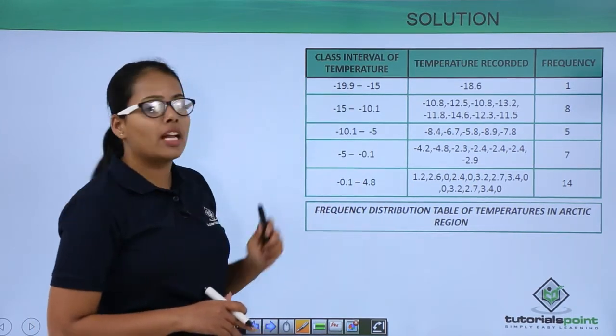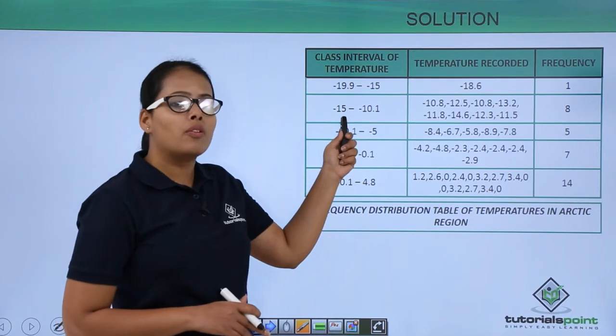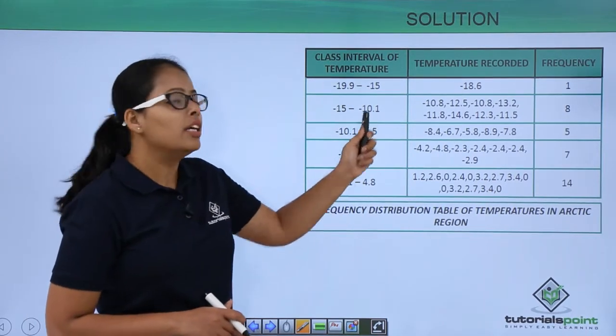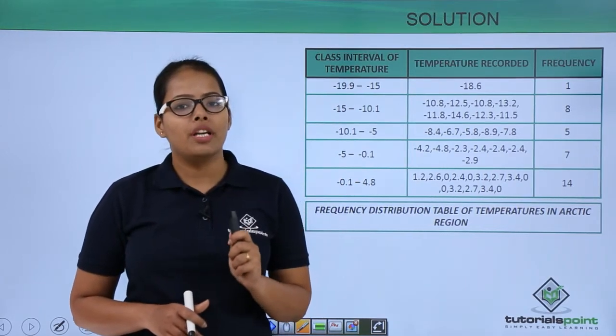That's why I've taken another interval from -15. What you do is add 4.9 to it to get the upper limit as -10.1.